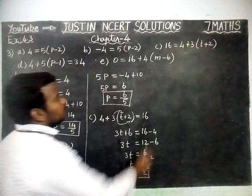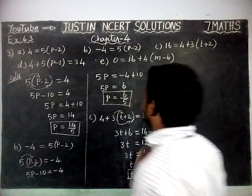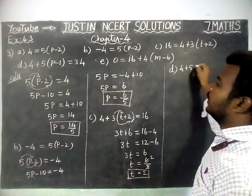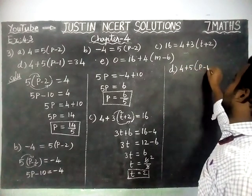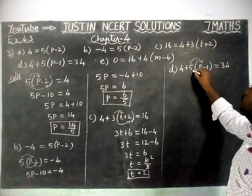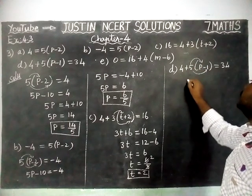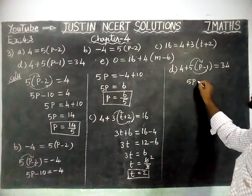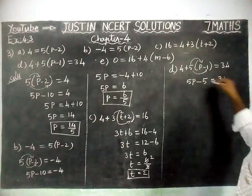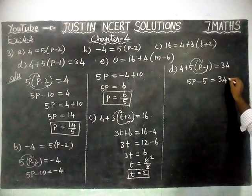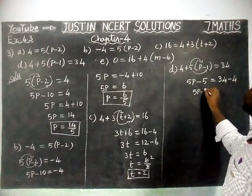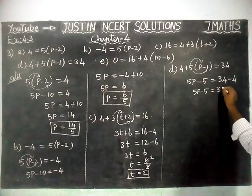Part D: 4 plus 5 within bracket, P minus 1, is equal to 34. This 5 is common for P also and minus 1 also. 5 into P equals 5P, plus into minus equals minus, 5 into 1 equals 5. So 5P minus 5 equals 34. This plus 4 is going to the right hand side, so minus 4. Now 5P minus 5 is equal to 34 minus 4, which equals 30.